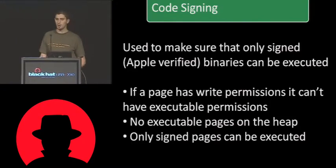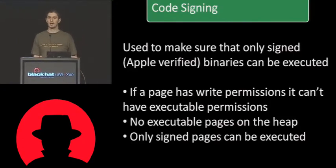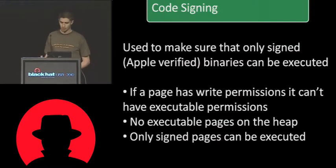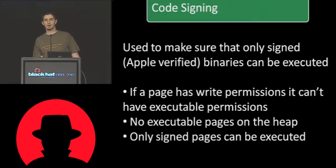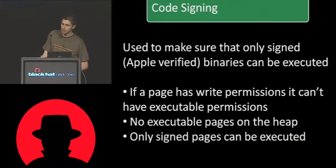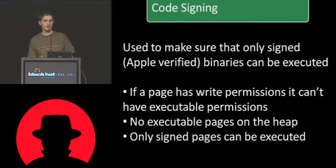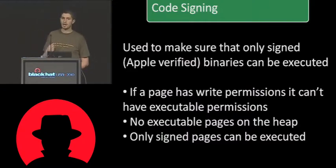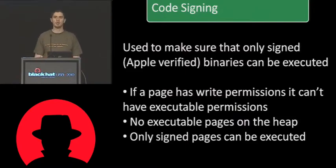To get back to code signing — the way code signing works is that you have some rules to follow. The first rule is that if a page has write permission in memory, it can't have executable permission. So you basically cannot change the permission of a page, put your shellcode there, then change the permission back and try to execute the shellcode. You also can't have any executable pages on the heap. And finally, only signed pages can be executed.